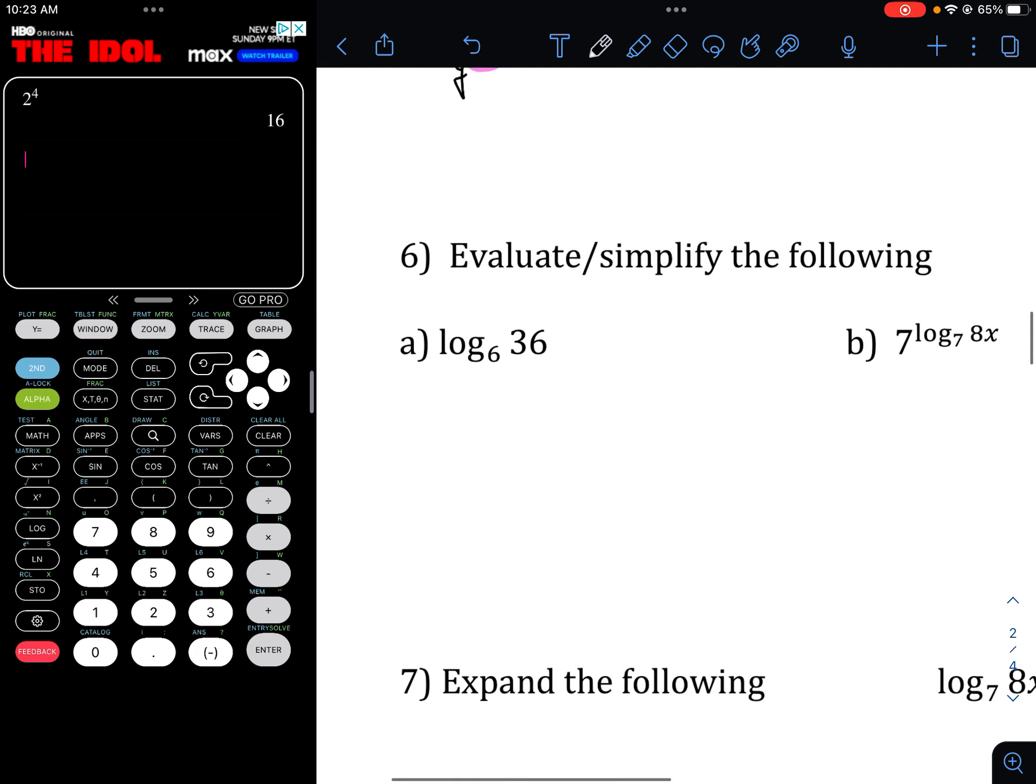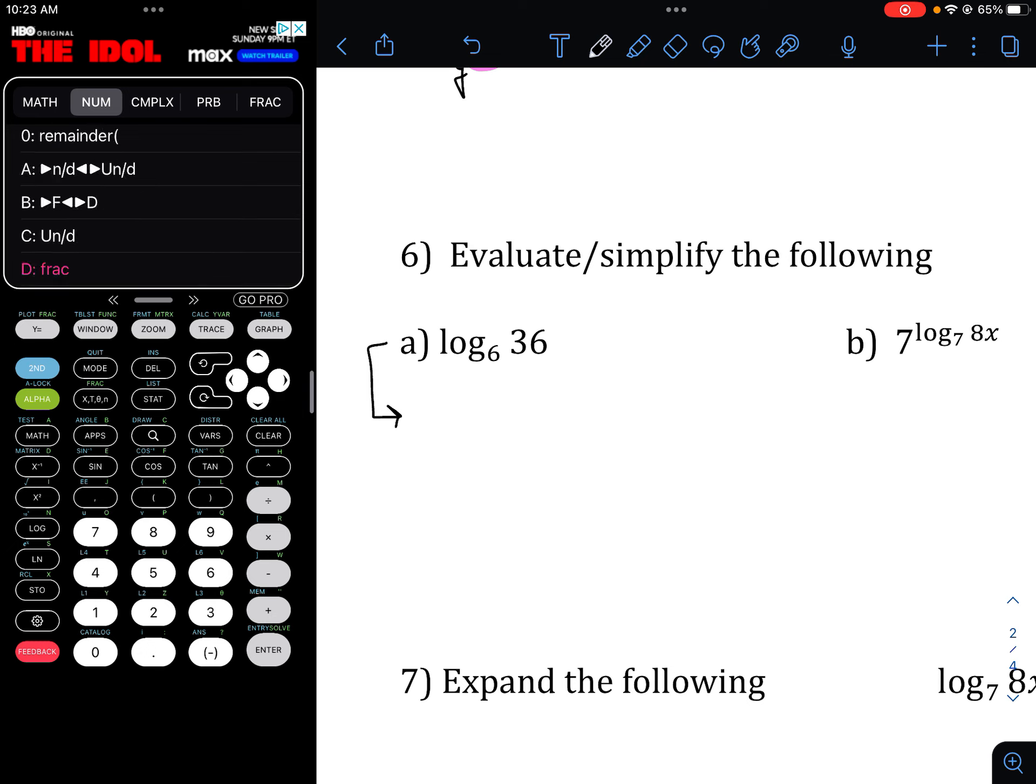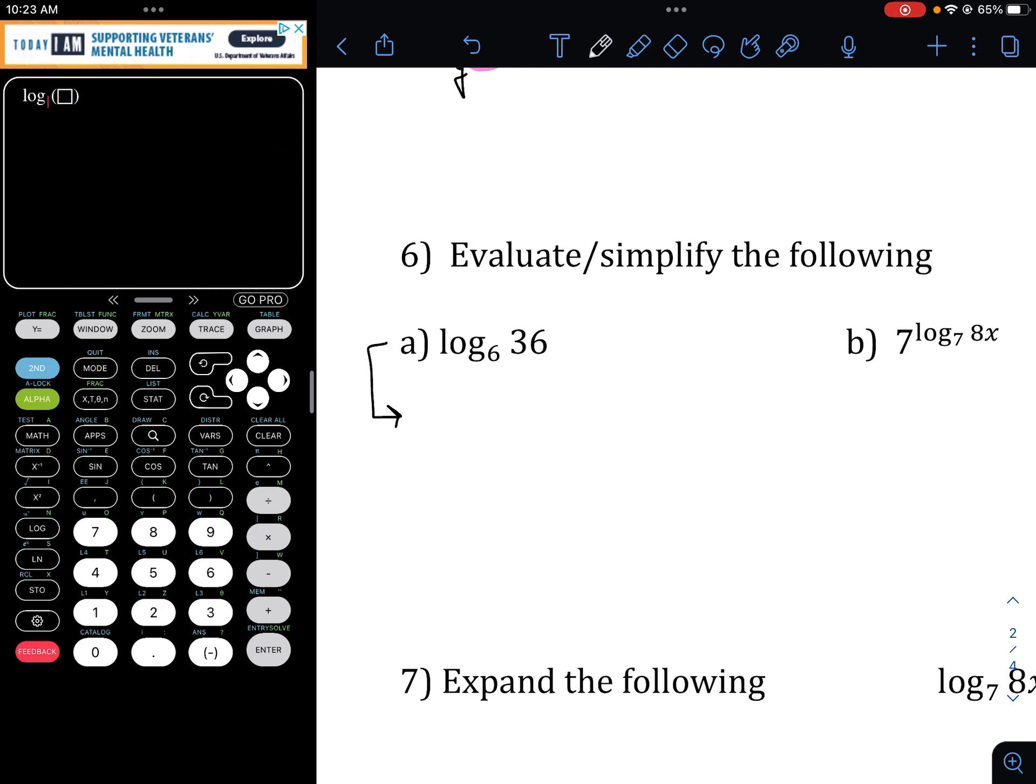Logarithms. So, let's remember our logs. You can type these into the calculator. So, that's really the easiest way to evaluate them. Log 6 of 36. And you're going under math, num, and looking for log base. Actually, just math, log base. Math, log base. And then you can do 6 and 36. Hit enter. And you get 2.